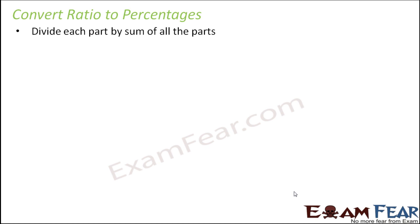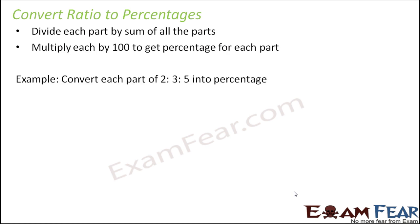So in order to convert ratio to percentages, again we follow a few very simple steps. So let us look at this example. Let's say that you have to convert each part of this ratio 2 is to 3 is to 5 into percentage. So how would you convert it into percentage? So the first step is that divide each part by sum of all the parts. So what are the three parts here? 2, 3 and 5.